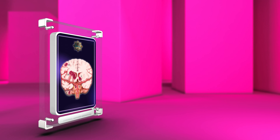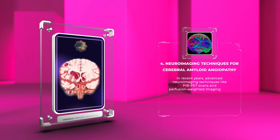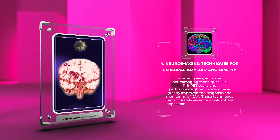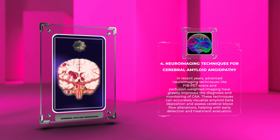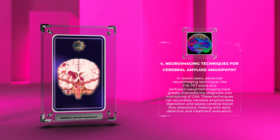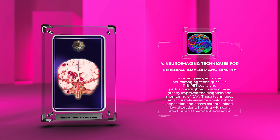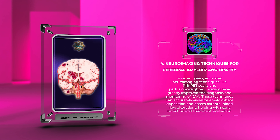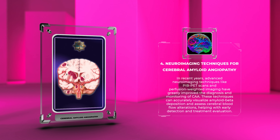In recent years, advanced neuroimaging techniques like PIB PET scans and perfusion-weighted imaging have greatly improved the diagnosis and monitoring of CAA. These techniques can accurately visualize amyloid beta deposition and assess cerebral blood flow alterations, helping with early detection and treatment evaluation.